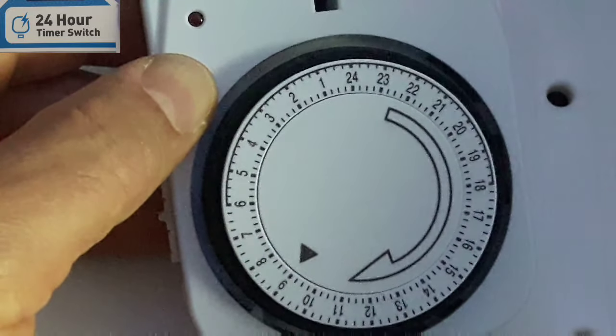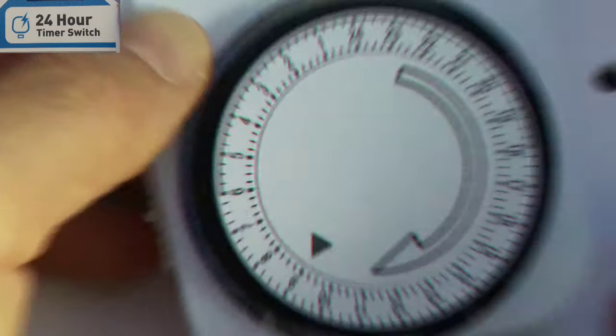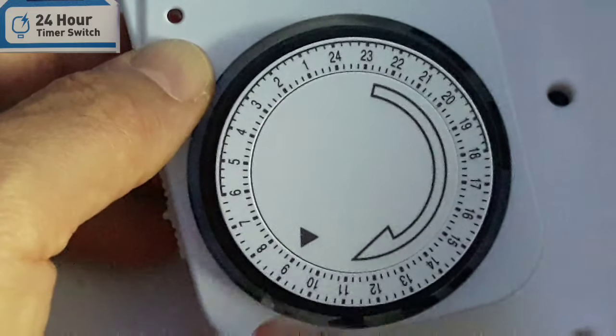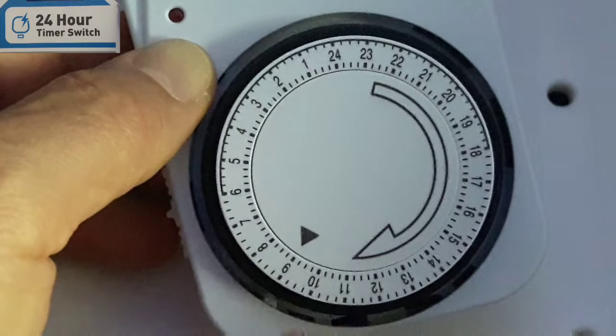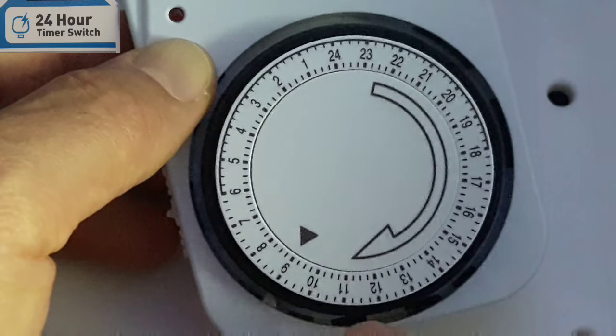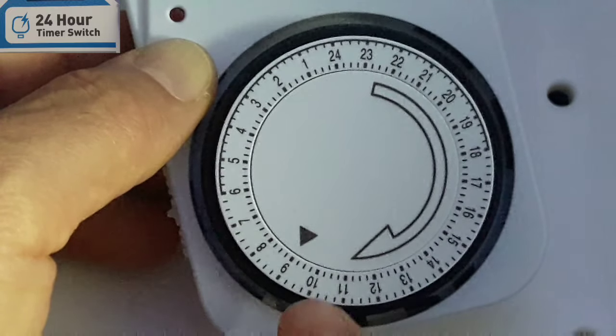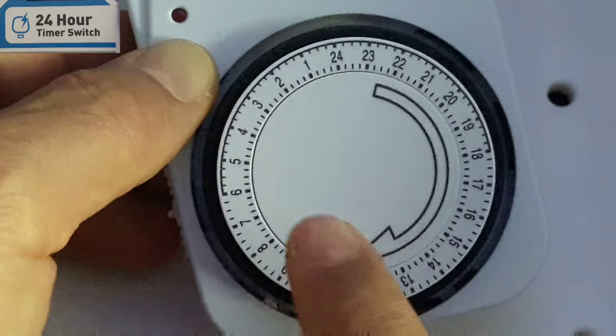It's on nine o'clock now, so the time that we've got now is nine o'clock. The arrow is facing nine o'clock, so I'm going to set up my timer for my appliance to start from ten o'clock until one o'clock.